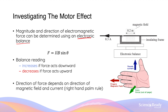The angle θ is the angle between the conductor and the direction of the magnetic field. If the force caused by the magnetic field is acting downwards, the mass reading as displayed by the electronic balance will increase.